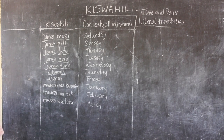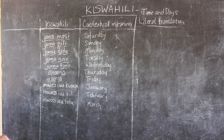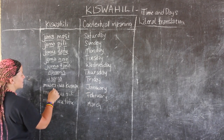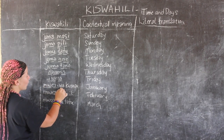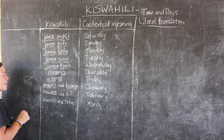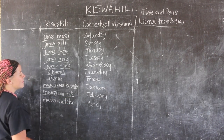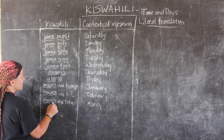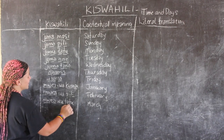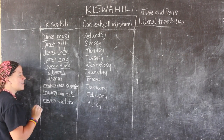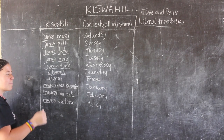For the months, it's just counting — the first month, the second month, third, fourth, fifth, sixth, up to the twelfth month. Mwezi wa kwanza means the first month, which is January. Mwezi wa pili means February, the second month. Mwezi wa tatu is the third month, March. You'll notice kwanza is different from moja — kwanza means 'first' whereas moja is 'one.' Pili is 'second' whereas mbili is 'two.' So these first two are a little different.